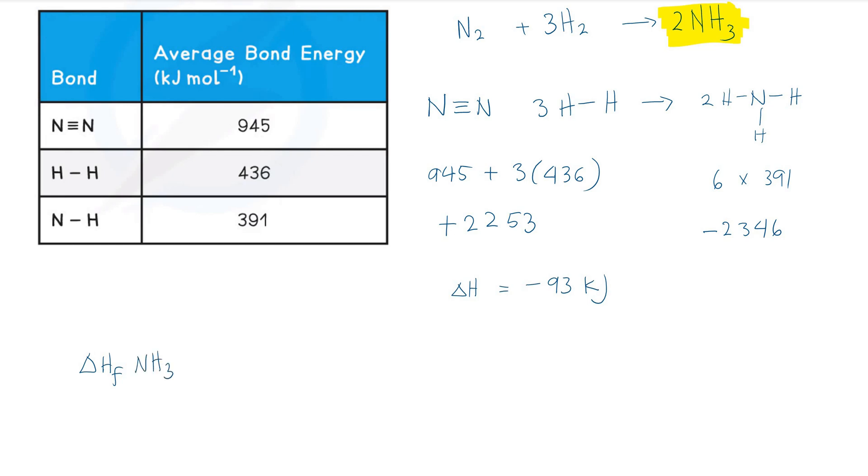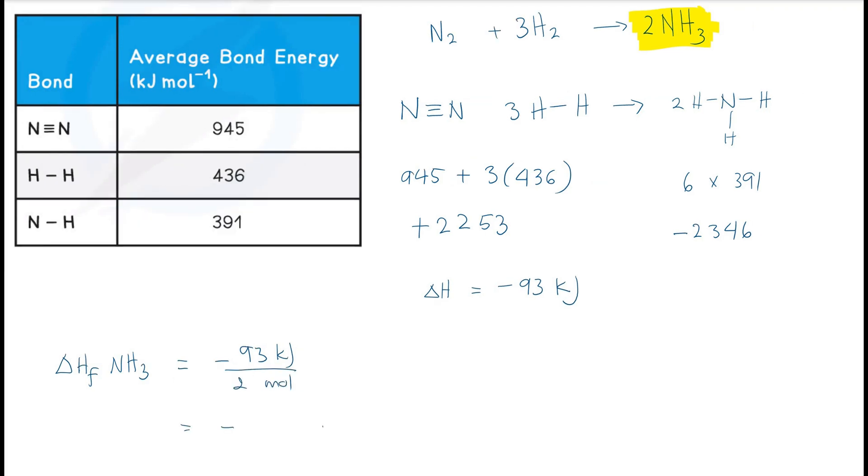Remember, by definition, the enthalpy formation of a substance is the energy involved in the formation of one mole of that substance. This will be negative 93 kilojoules divided by two moles, which is negative 46.5 kilojoules per mole for the enthalpy change of formation of ammonia.